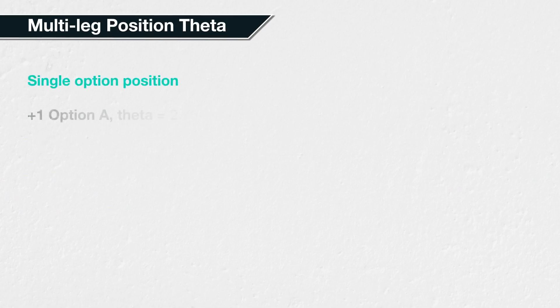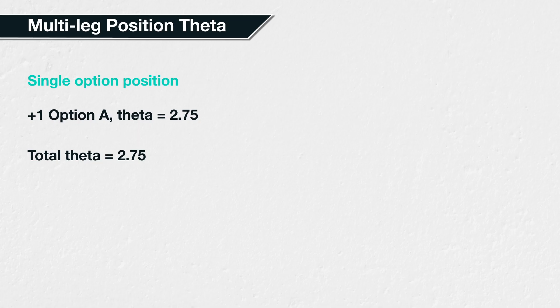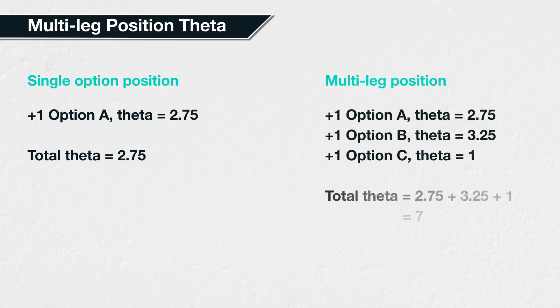So far in this section we have only discussed the theta of a single option at a time, but most option traders are likely to have positions or portfolios consisting of more than one option contract at a time. They will want to know the theta of their entire portfolio, and how their total theta will evolve as time passes or as other parameters change, such as the underlying price. All of this information will help them gauge how their options will be affected by the passage of time.